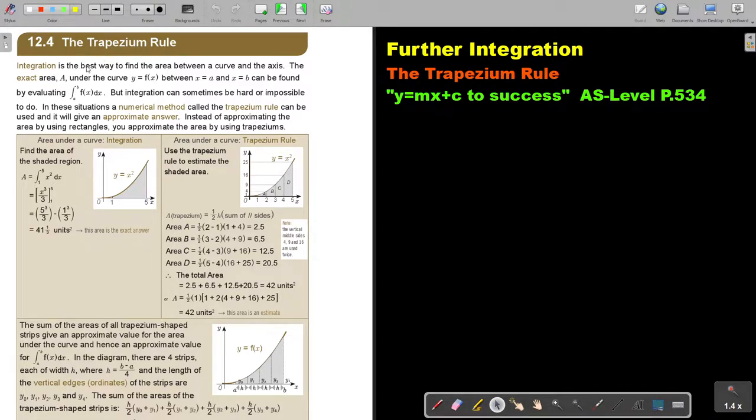You will find this on page 534 in the Namibia AS level mathematics textbook y equals mx plus c to success. Integration is the best way to find the area between a curve and the axis. But integration can sometimes be hard or impossible to do. In this situation a numerical method called the trapezium rule can be used and it will give an approximate answer.